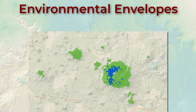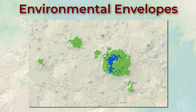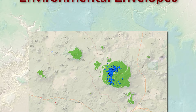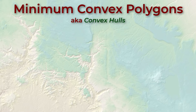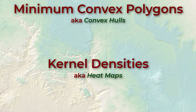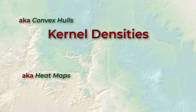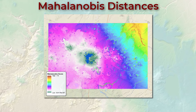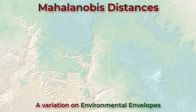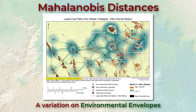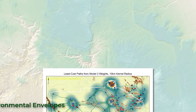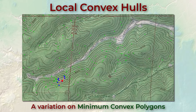First we're going to look at environmental envelopes, which take a landscape level approach to identify the general habitat used by an entire population of animals. Next we'll look at minimum convex polygons and kernel densities, which are finer scale methods to estimate home range areas for individuals or groups of animals. In many cases a wildlife biologist will use more sophisticated methods, but these methods are at the root of many habitat and home range analysis techniques and definitely worth your while to learn.